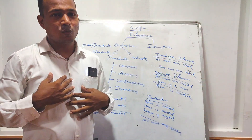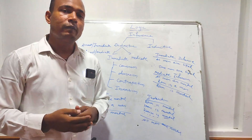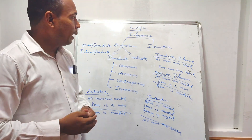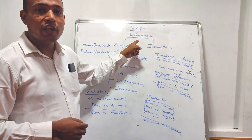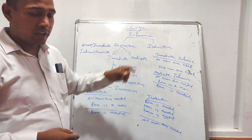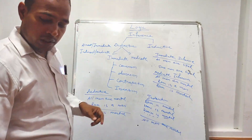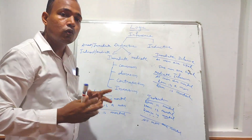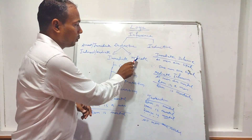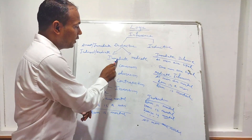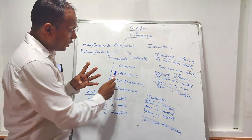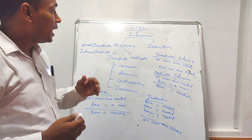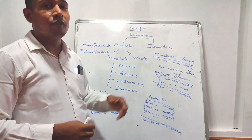Hello everyone, I am Jagman. Today is my first video on the YouTube channel Secondary Logic. Inference is divided into two types: deductive and inductive. Deductive is divided into two types, and immediate inference is divided into four types: conversion, obversion, contraversion, and inversion.